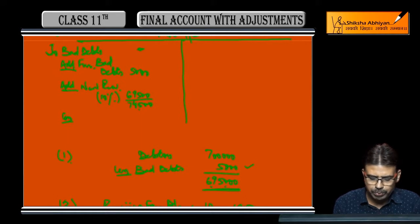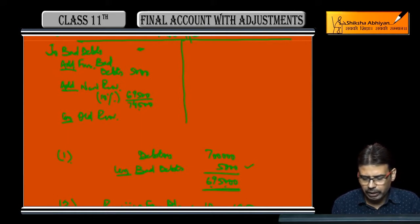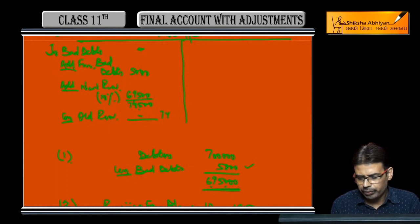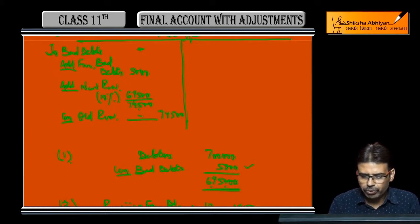Less old provision, which is given in the trial balance — in this question it is not present. So on the debit side of the profit and loss account, the figure coming is 74,500.